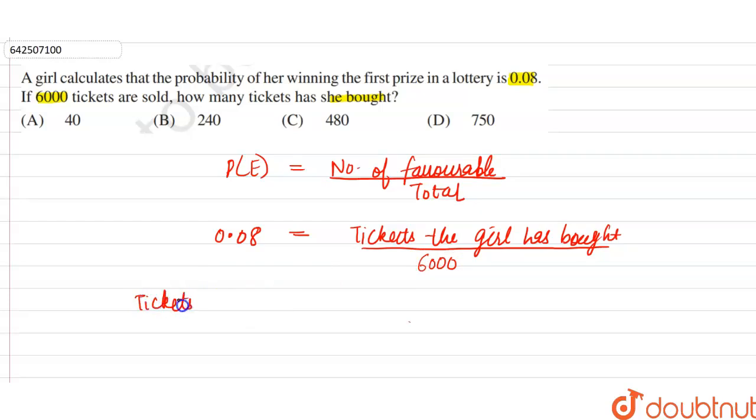Tickets bought will be equal to 6,000 into 0.08. So, this is equal to 6 into 8, 48 and 3 zeros. And we will place the decimal 2 digits from the left, here.